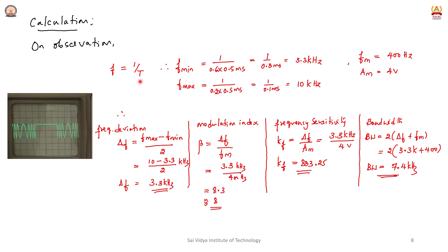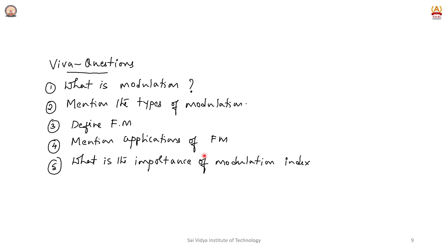Note down the readings of F minimum, F maximum, FM, and AM (message frequency and amplitude). Substitute these values in the equations to find frequency deviation, modulation index, frequency sensitivity, and bandwidth. Based on the experiment, these questions may be asked in the examination.